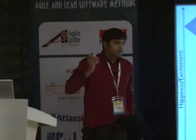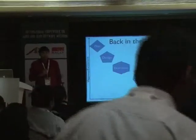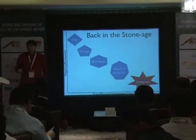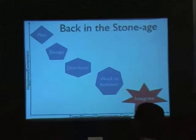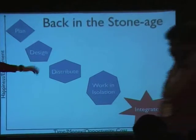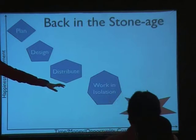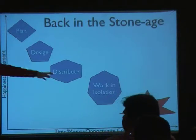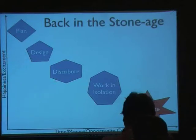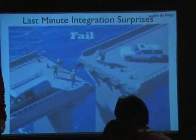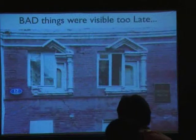Everyone is familiar with the kind of development we did back in the stone age. What do we see in stuff like this, right? When we do development in this fashion where we plan, design, distribute work, work in isolation, and then come back and try to integrate stuff — I have not even put the testing part in yet. I am just talking about this stage — we see a big surprise. What we see generally is a lot of last-minute surprises. Bad things are visible too late, and we find that is a real problem.